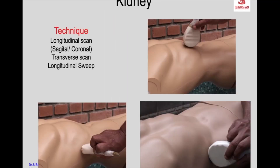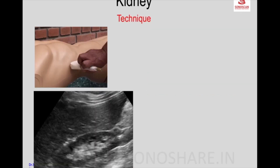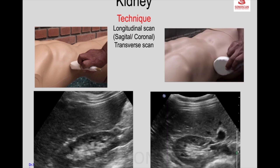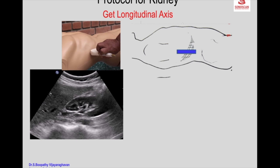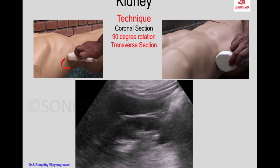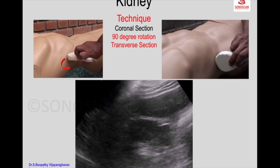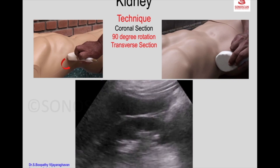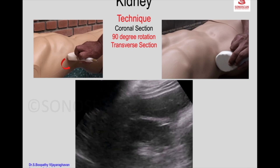Basically, it is coronal anteroposterior and the transverse sweep from above downwards. This is the longitudinal scan of the kidney — either sagittal or coronal — and the transverse scan of the kidney, which can be taken from the anterior subcostal or from the right flank in the coronal or sagittal scan. Then rotate the probe 90 degrees to get the short axis or the transverse axis of the kidney as shown in the video.